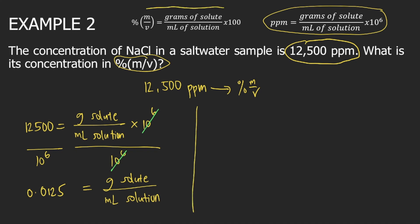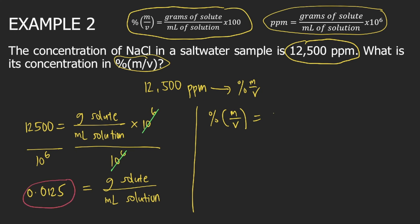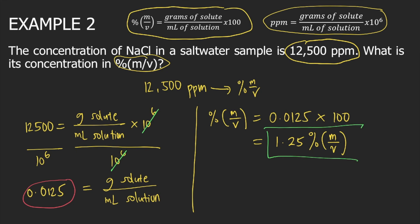Then we use the formula for percent mass over volume. This is equal to grams of solute divided by ml of solution — which we already got as 0.0125 — times 100. So 0.0125 times 100 equals 1.25% m over v. And this is the answer to example two.